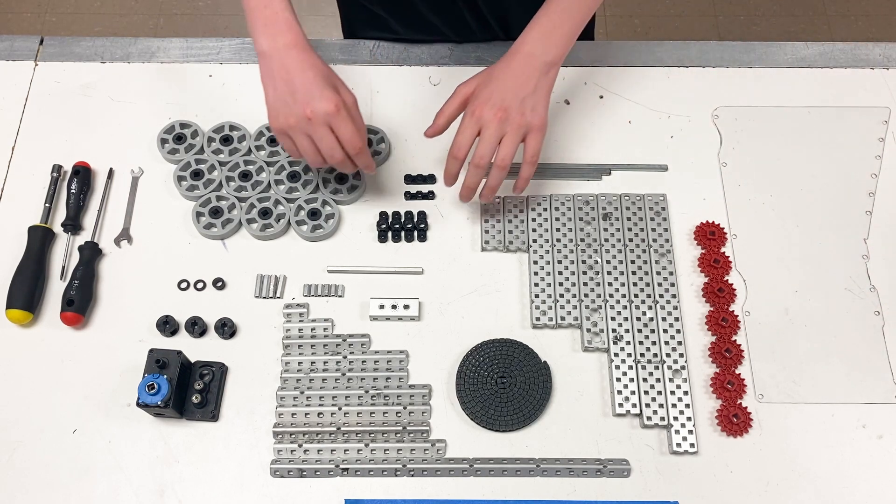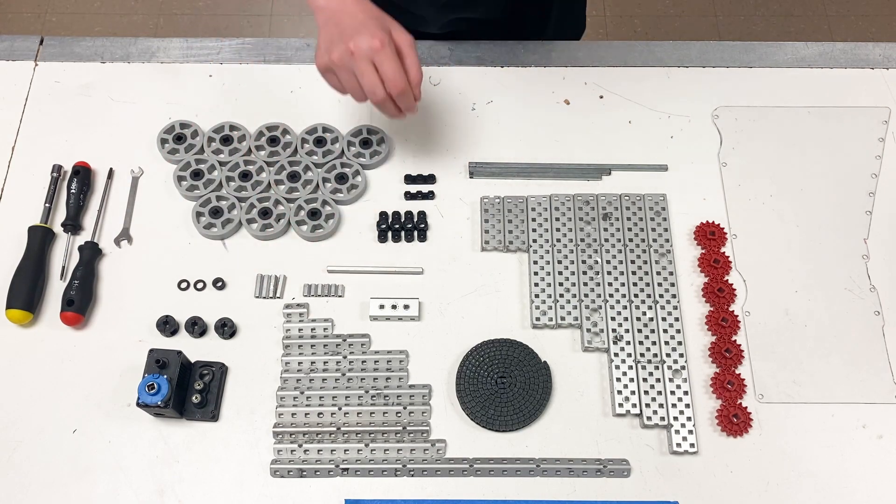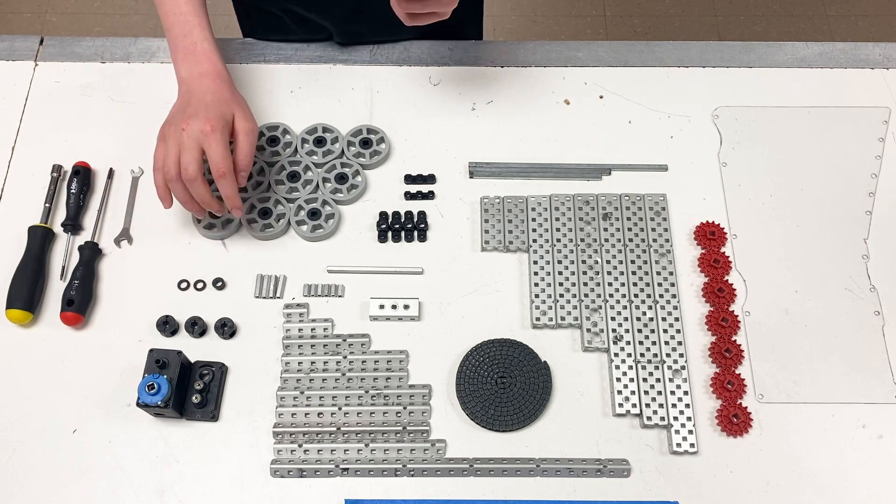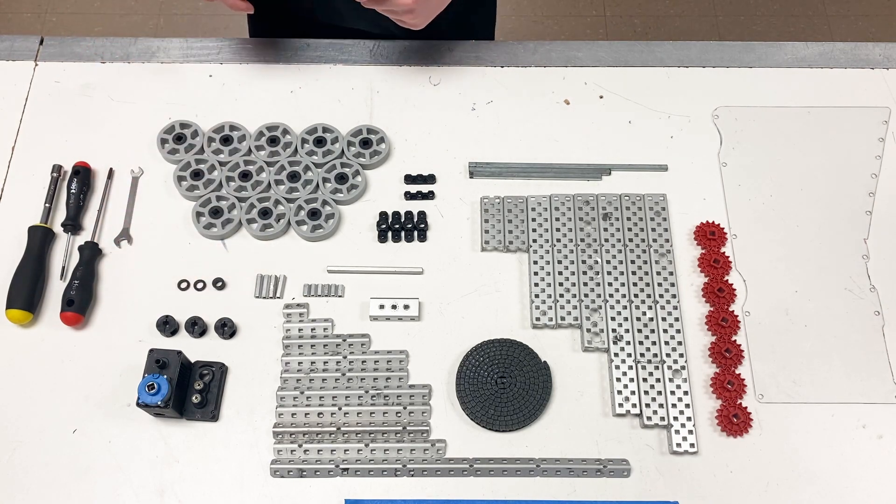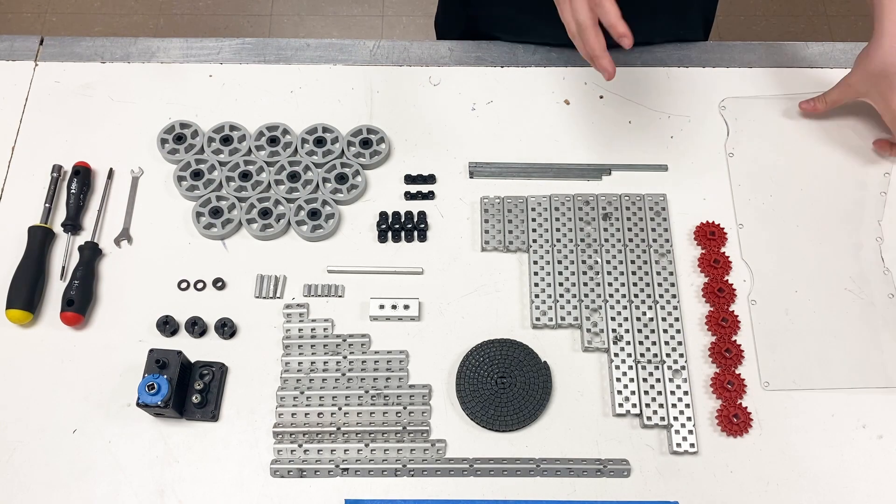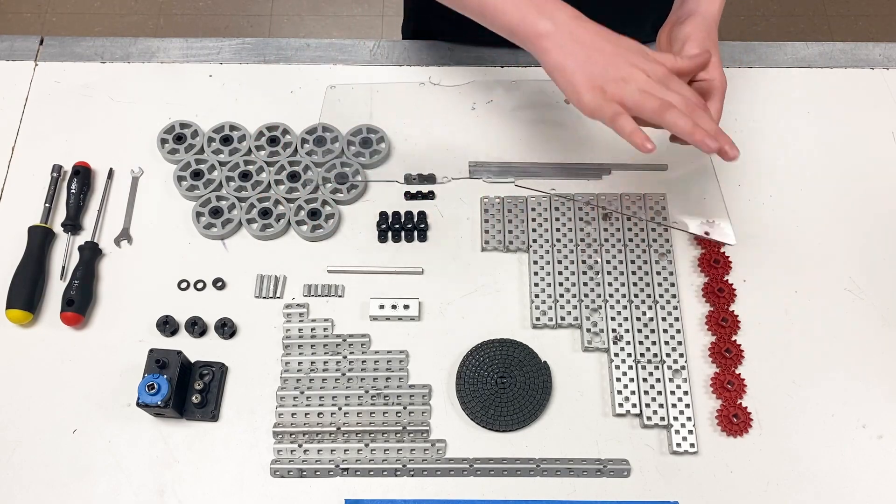We have a polycarbonate piece and various assortment of standoffs. We have two small bushings, one large bushing, three high-strength bearings, and a turbo motor. For the polycarbonate, you can find the dimensions on the CAD.